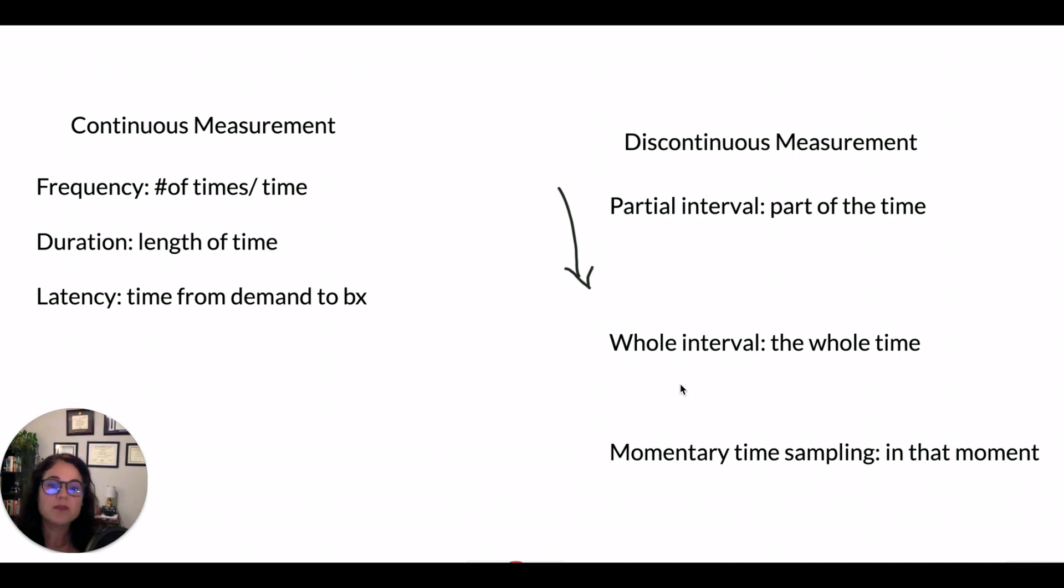Whole interval is oftentimes for behaviors that you want to increase or things that really happen the whole time. So seated behavior, on task, things like that. Momentary time sampling is on that interval. When the timer goes off, you look up in that moment in time and see if it's happening or not.